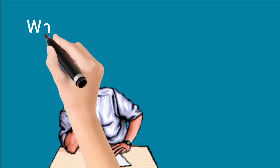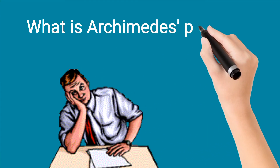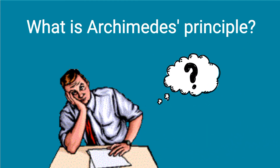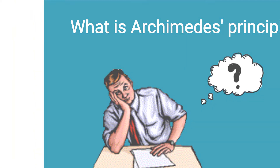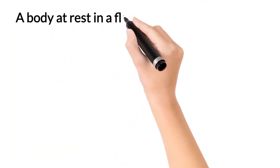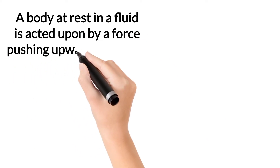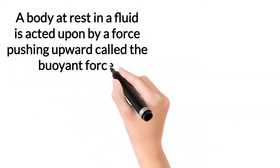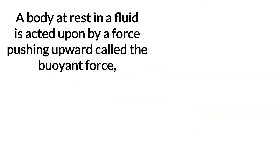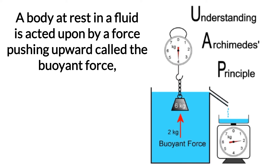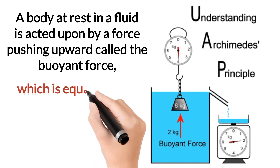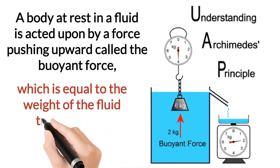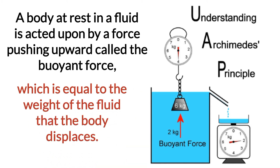Let's discuss Archimedes' principle. Suppose a body is in a fluid — a force acts in the upward direction. This force is known as buoyant force. Buoyant force is equal to the weight of the fluid that the body displaces. As shown in the image, the displaced weight of the fluid is two kilograms and the buoyant force is also two kilograms.